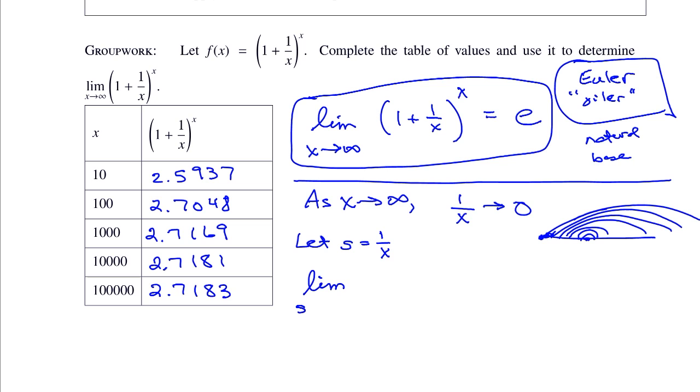So this is S goes to 0 of 1 plus, here it should be 1 over x, but 1 over x is S. And now what do I do with the exponent, x?